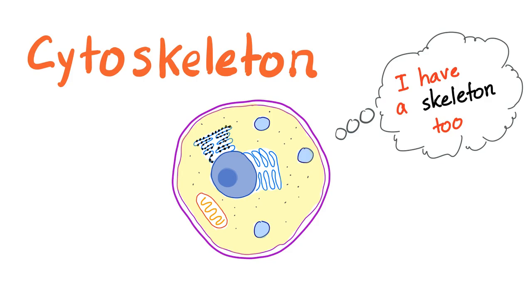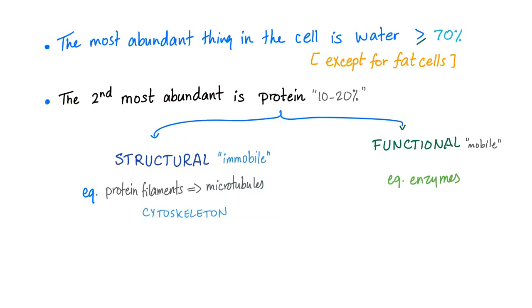Take good care of your cell because it has a skeleton too. I've told you before that the most abundant thing in the cell is water. The second most abundant is protein. Proteins are either structural proteins, which are immobile, or functional, which are mobile. Structural such as the cytoskeleton, and functional such as enzymes.